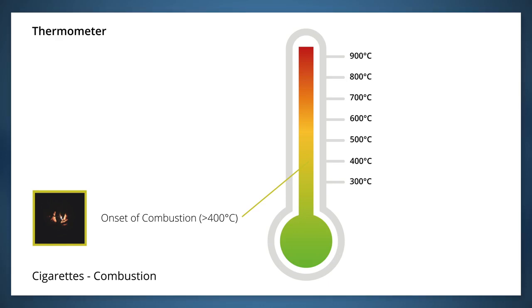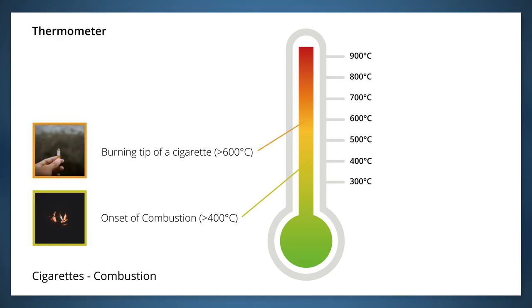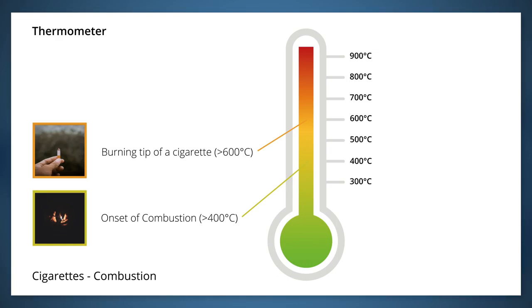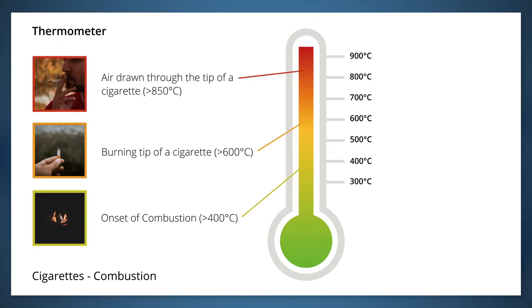Once this combustion reaction sets in, the temperature at the tip of a cigarette is greater than 600 degrees C, and when air is drawn through the tip of the cigarette, the temperature rises above 850 degrees C. To put this in perspective, this is about four times hotter than a frying pan.